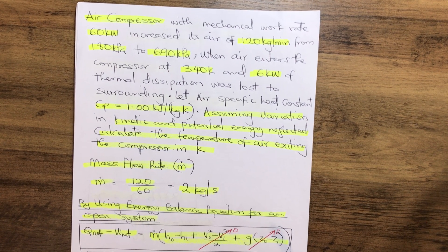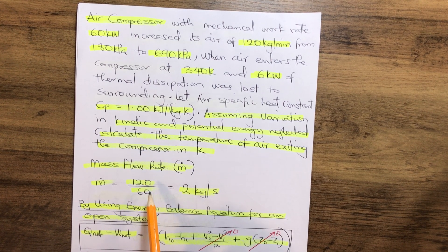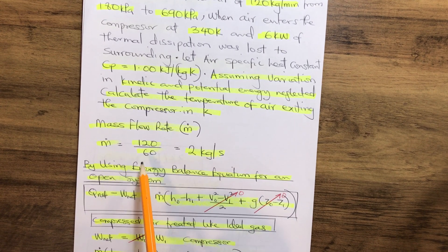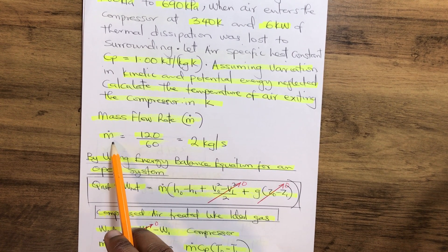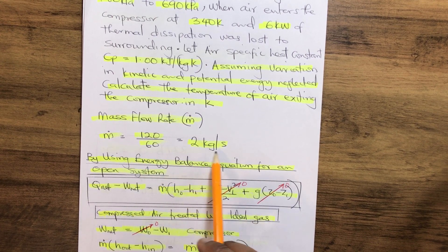First of all, we need to convert the mass flow rate from kilograms per minute to kilograms per second. By doing this we have 120 over 60 which gives us 2 kilograms per second.